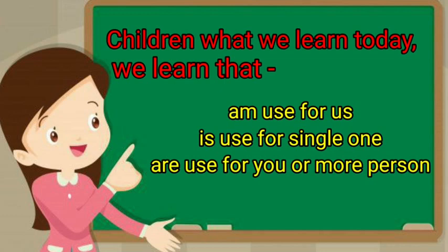Yahan bacchon, aaj humne kya seekha? Aaj humne seekha: 'am' ka upyog hamesha apne saath hota hai — jab hum apne baare mein baat kar rahe hon. Jab kisi doosre ke baare mein baat karein to 'is' — he, she ke saath. Aur jaise hi hum zyada logon ke baare mein baat karein, to 'are' ka upyog karenge. Singular ke saath 'is', aur zyada ke saath 'are', and you can also use 'are'.